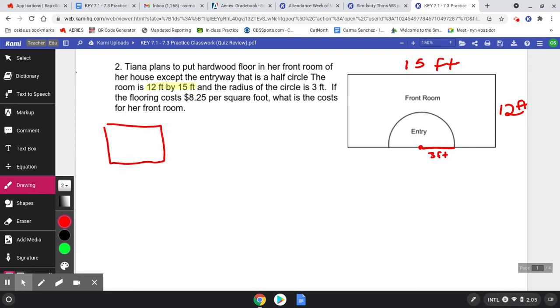So we've got to do the area of the whole rectangle minus the area of the semi-circle in order to find that missing area.